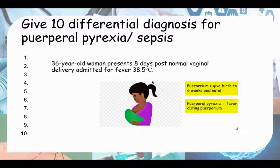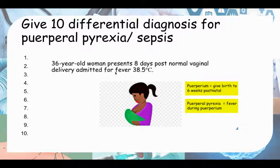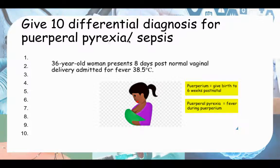Before we take a history, we need to have some differentials in our head to ask some relevant questions. You can pause this video and try to think of 10 differential diagnoses for puerperal pyrexia or puerperal sepsis.